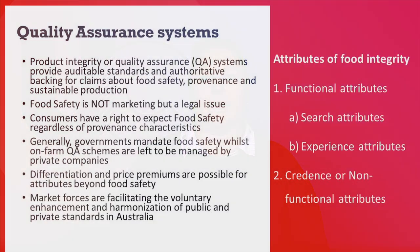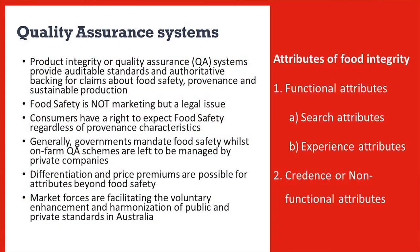First, we must understand what is meant by food quality and safety. The attributes of food safety are classified into the following classes: Functional, Credence, or Non-Functional Attributes. Functional attributes can be search attributes — characteristics that can be easily observed by a purchaser, for example colour, size and freedom from blemishes.